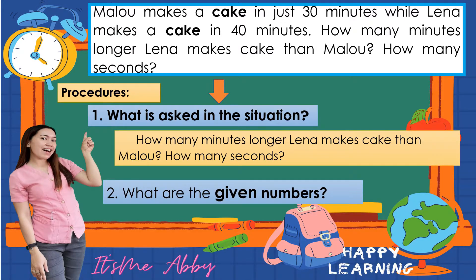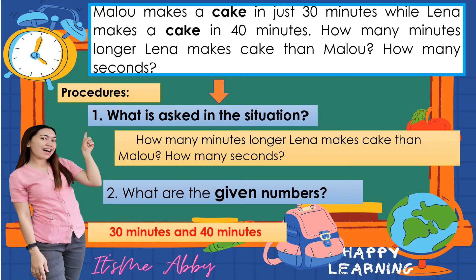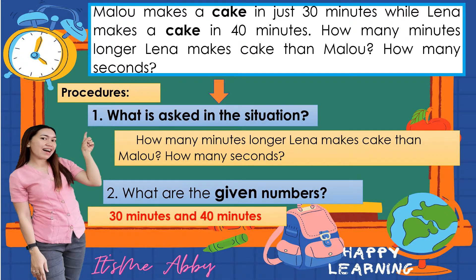Second procedure — what are the given numbers? The given numbers are 30 minutes for Malou and 40 minutes, which represents the time Lena takes to make a cake.